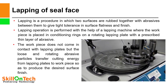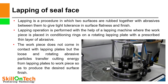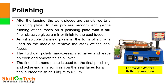Lapping is required to achieve flatness of the seal face and the required surface finish, so this operation should be done very carefully. After lapping, polishing is the final finishing of the seal faces. You can see a picture of a Lap Master Wolter's polishing machine. After lapping, the workpieces are transferred to a polishing plate. In this process, smooth and gentle rubbing of the faces on a polishing plate with a finer abrasive gives a mirror finish to the seal faces. An oil-soluble diamond paste in the form of slurry is used as the media to remove stock from the seal faces.